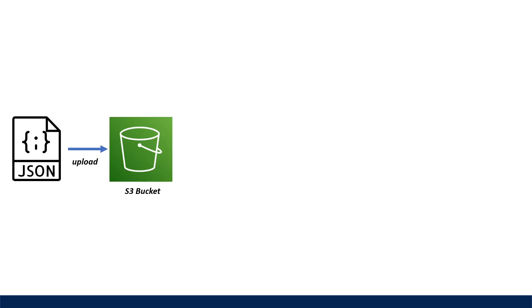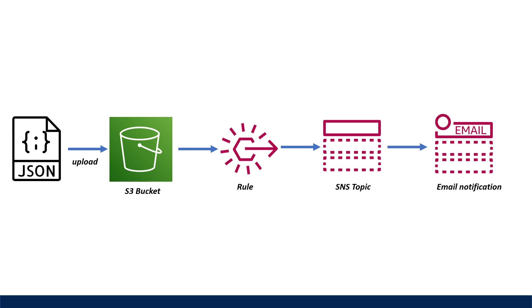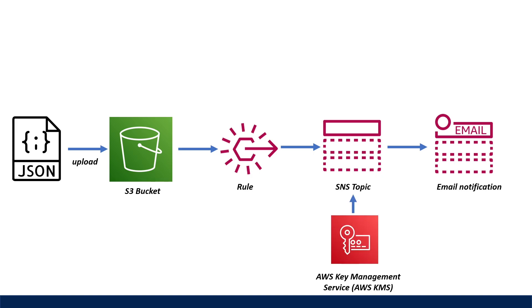The architecture to achieve this is going to look like this. Every time I upload a file to my S3 bucket in a specific subdirectory, my rule is going to be triggered, which is going to send a notification to my SNS topic. With my email, I'm going to subscribe to this SNS topic, so I get an email notification anytime a file enters the S3 bucket directory I'm watching. We're also going to cover how to achieve this when your SNS topic is encrypted.